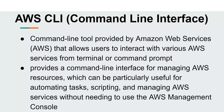By definition, AWS CLI is a command line tool provided by AWS that allows users to interact with various AWS services from a terminal or command prompt. We'll understand how to set up the terminal, how to run commands, and what the syntaxes are in the coming videos. It provides a command line interface for managing AWS services.